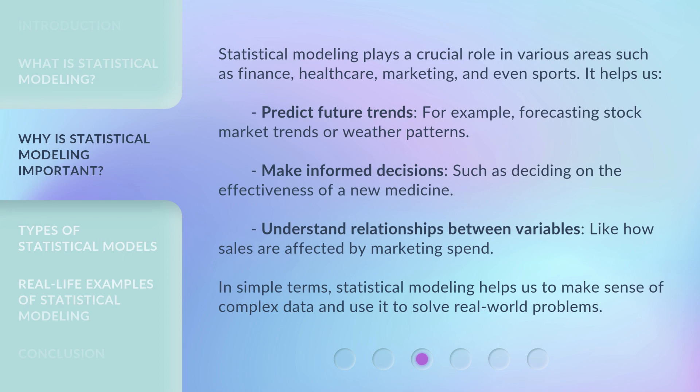Statistical modeling plays a crucial role in various areas such as finance, healthcare, marketing, and even sports. It helps us predict future trends — for example, forecasting stock market trends or weather patterns — make informed decisions, such as deciding on the effectiveness of a new medicine, and understand relationships between variables, like how sales are affected by marketing spend. In simple terms, statistical modeling helps us to make sense of complex data and use it to solve real-world problems.